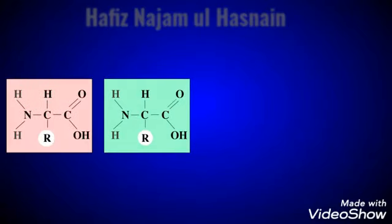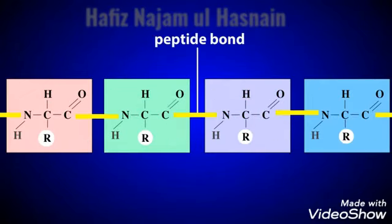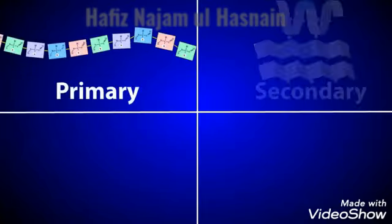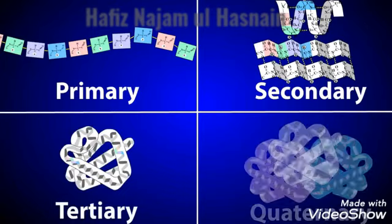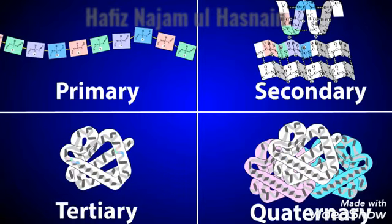Amino acids are linked together by peptide bonds, forming long polypeptide chains. As these chains form, the polypeptide develops multiple levels of structure, which contribute to its overall shape. These levels are called the primary, secondary, tertiary, and quaternary structures.